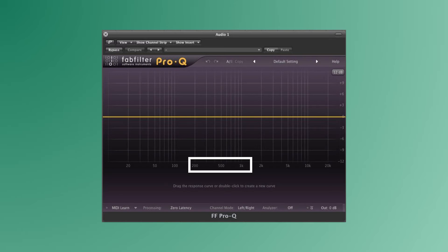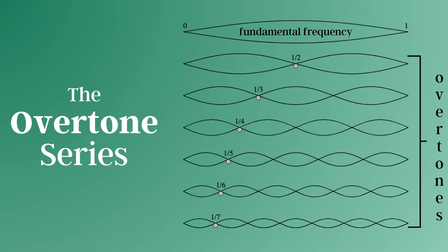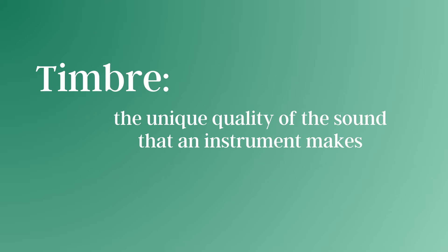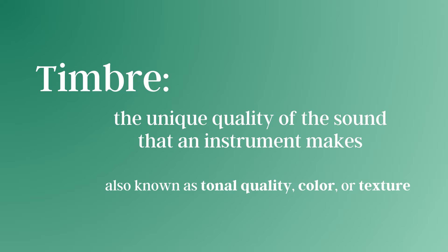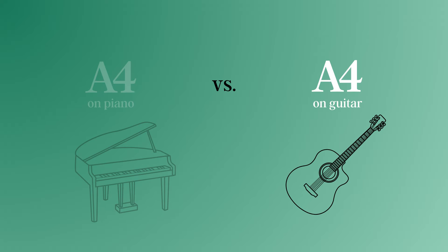Each instrument has a range of frequencies within this spectrum that it's able to play. There is a fundamental frequency range for every instrument, including the human voice. And then there's the upper harmonics of those frequencies, which has to do with the overtone series — these are what make music sound more complex than just a basic sine wave. These upper harmonics affect the tone of the sound, or the timbre. This can sometimes be described as the tonal quality, the color, or sometimes the texture. The timbre of an instrument is part of what makes A4 on the piano so different than A4 on the guitar.